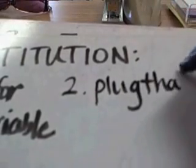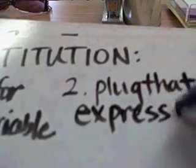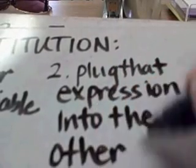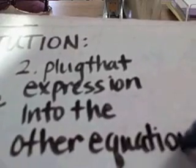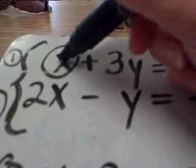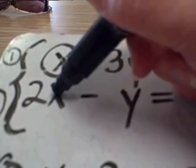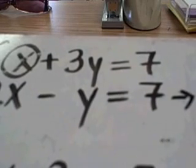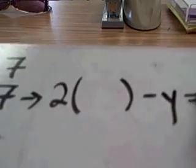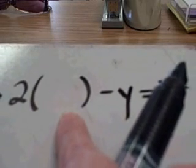Step two is to plug that expression into the other equation. It's important that you plug it into the other equation. Since I solved for x using the first equation, I need to plug what I got into the x from the second equation. So I'm going to rewrite the second equation with an empty space where the x used to be. 2x minus y equals 7.